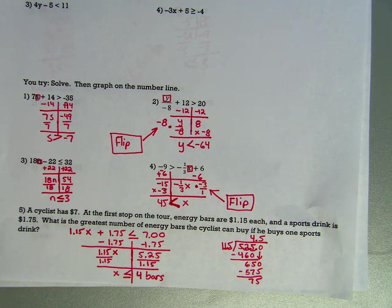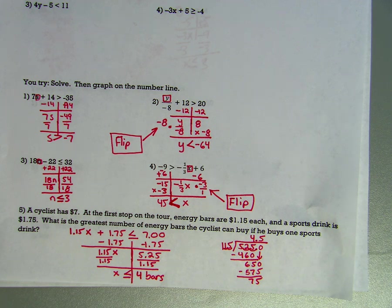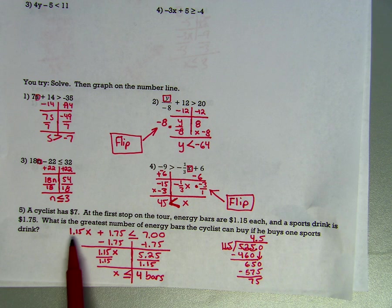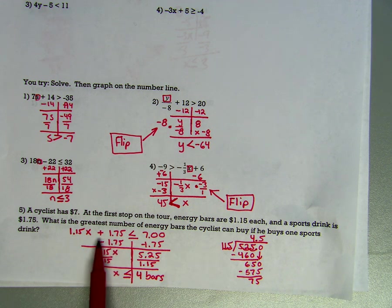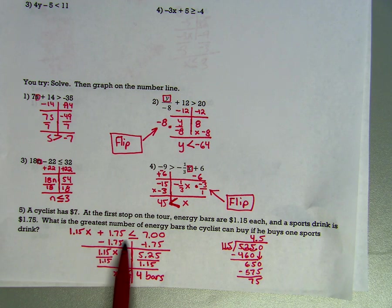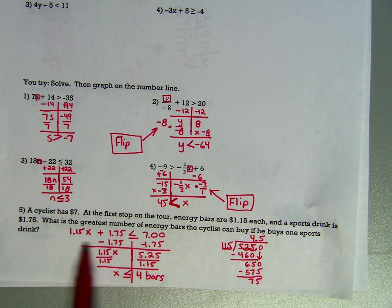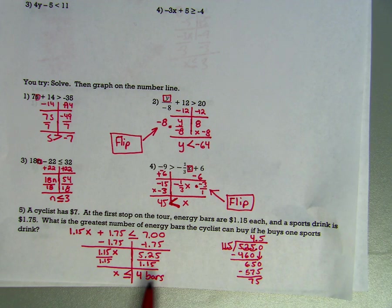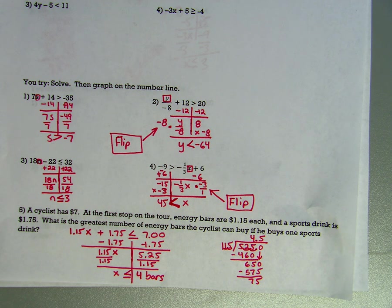Number 5 is a word problem: a cyclist has seven dollars. Energy bars are $1.15 each and sports drinks are $1.75. What is the greatest number of energy bars the cyclist can buy if he buys one sports drink? Let x equal the number of energy bars. The inequality is 1.15x plus 1.75 is less than or equal to 7. Subtract 1.75 on both sides, then divide by 1.15, and we get exactly 4 bars. He can buy four bars or fewer.